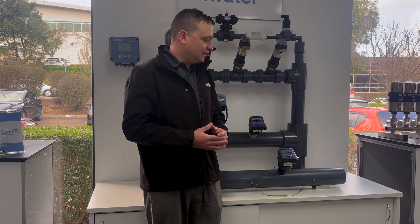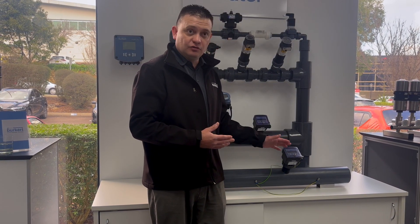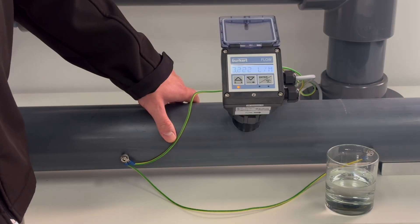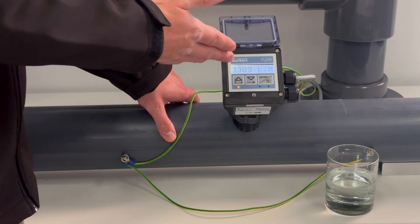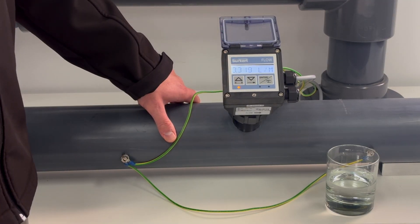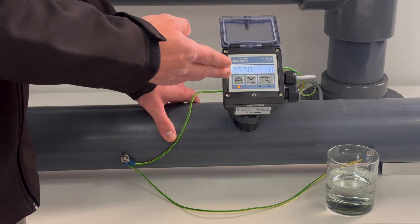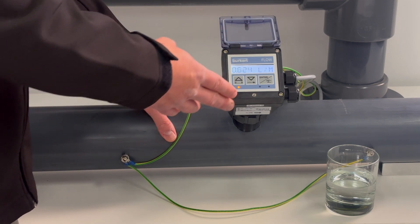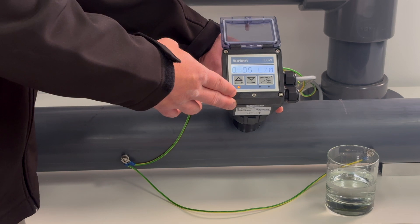Step four is another important step. We need to make sure that we perform a zero calibration, which we need to do through the menu. What we have here is a nuisance flow displaying on our flow meter which is showing a flow when there is actually no flow at standstill. That's caused because we have an empty pipe.